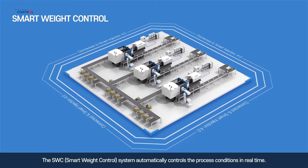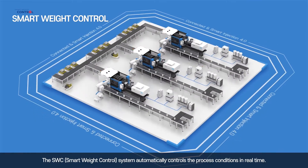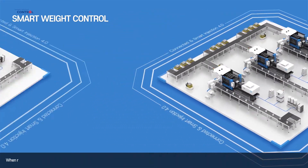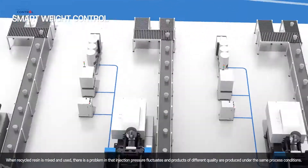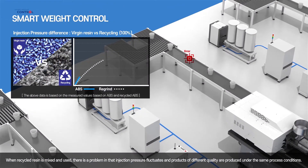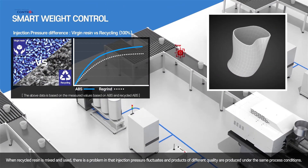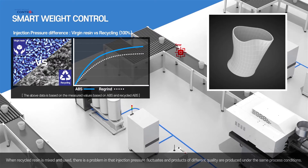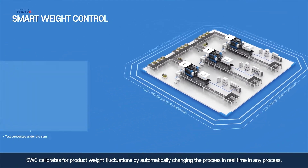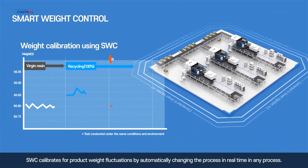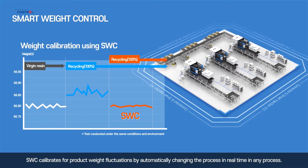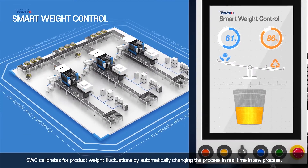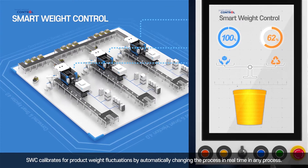The SWC Smart Weight Control system automatically controls the process conditions in real time. When recycled resin is mixed and used, injection pressure fluctuates and products of different quality are produced under the same process conditions. SWC Smart Weight Control calibrates to product weight fluctuations by automatically changing the process in real time.